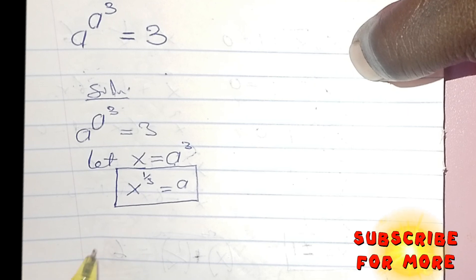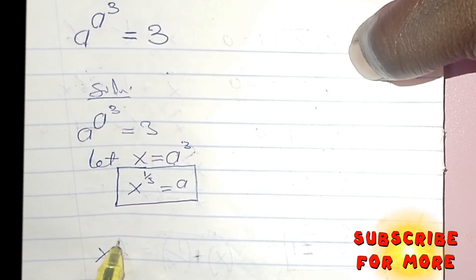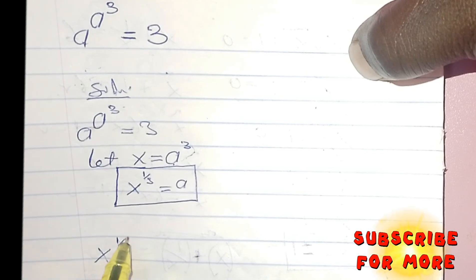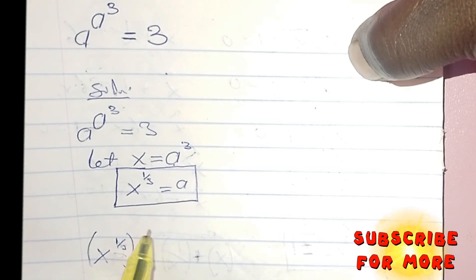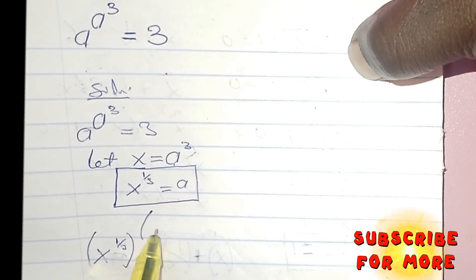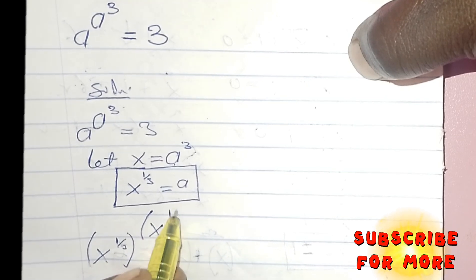Let's consider the original equation. Instead of A, I will now put X to an exponent of 1 divided by 3, then still X to an exponent of 1 divided by 3, then I have to an exponent of 3.